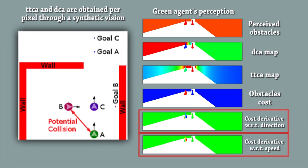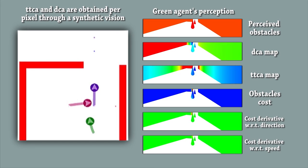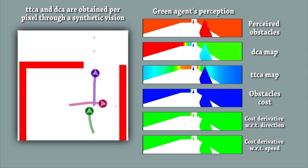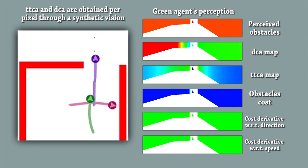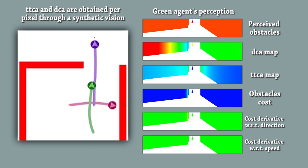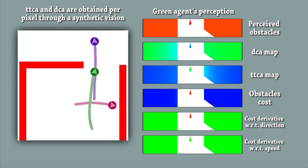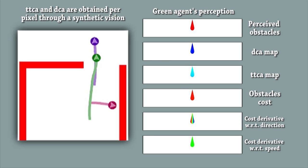We finally compute the partial derivatives of this function to determine the best motion adaptation. Iterating on this continuously produces trajectories. The images on the right show the vision of the green agent. Note how the agent combines speed changes and rotation changes to find the best motion adaptation.